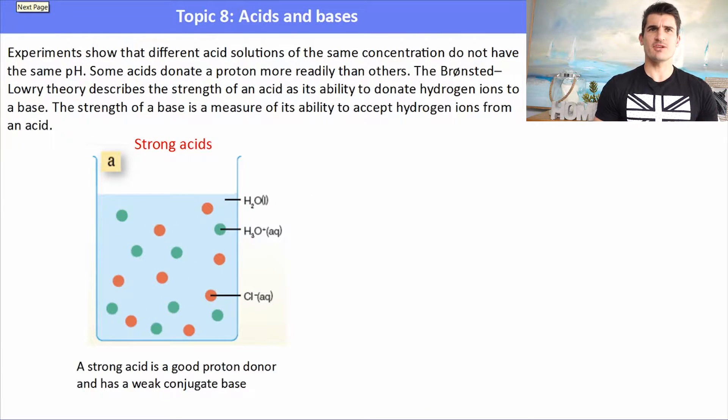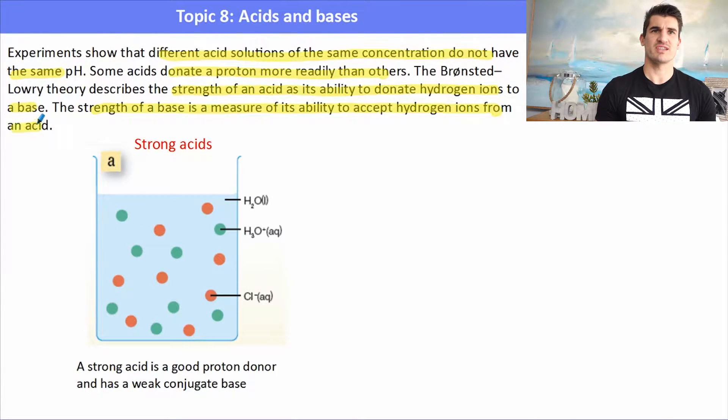The experiments show that different acid solutions of the same concentration do not have the same pH. Some acids are better proton donors than others. Remember, the Bronsted-Lowry theory says that acids will donate and bases will receive, and the strength of an acid or a base is its measure to ability of donating or accepting protons.